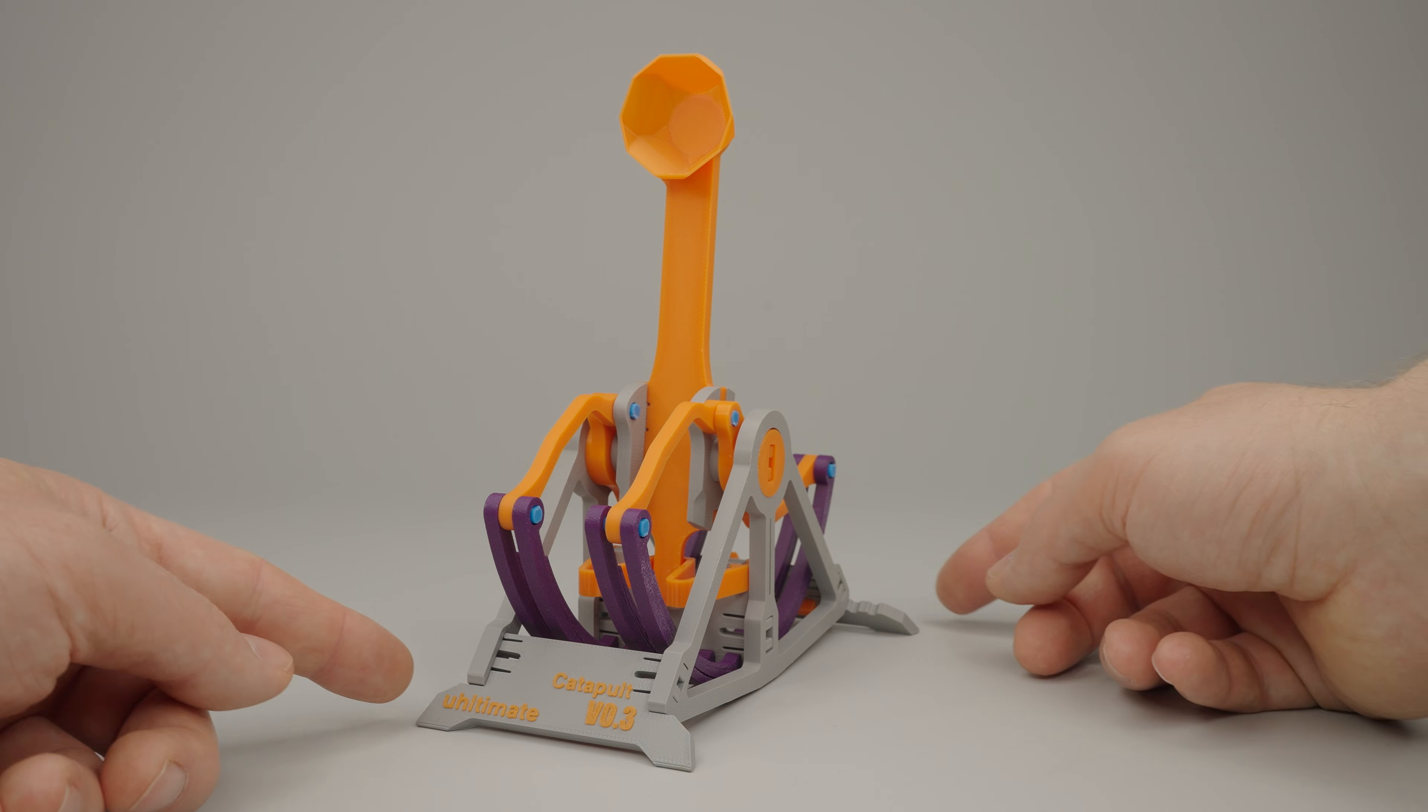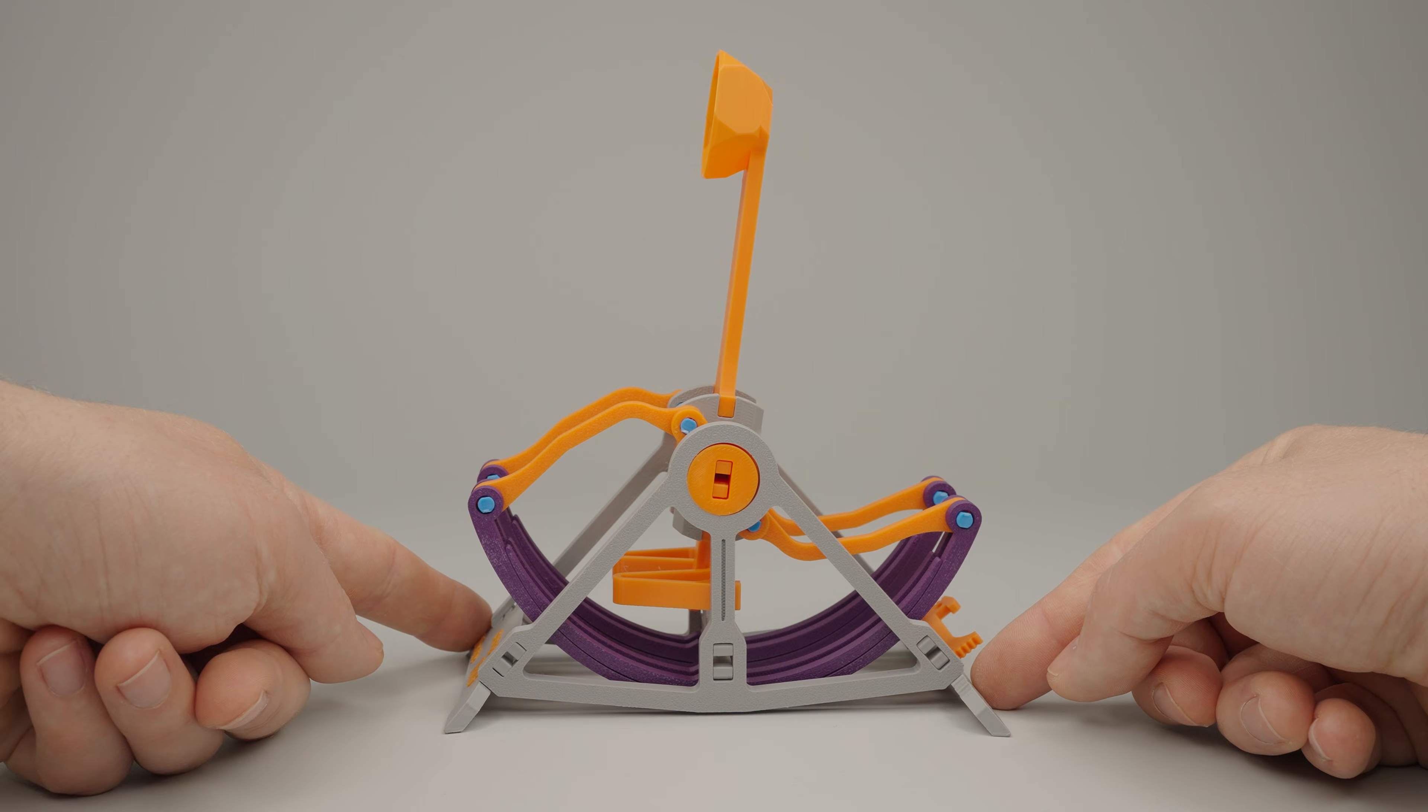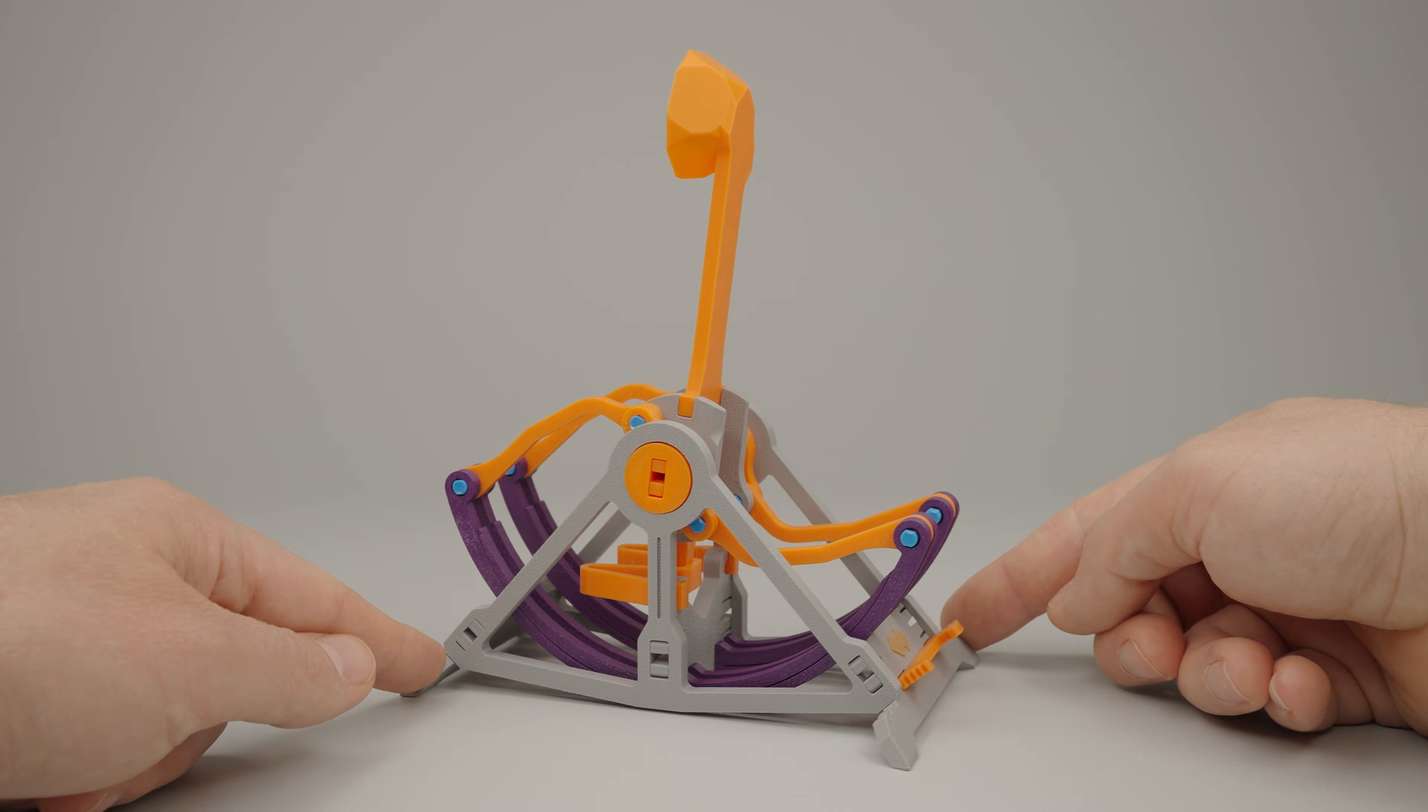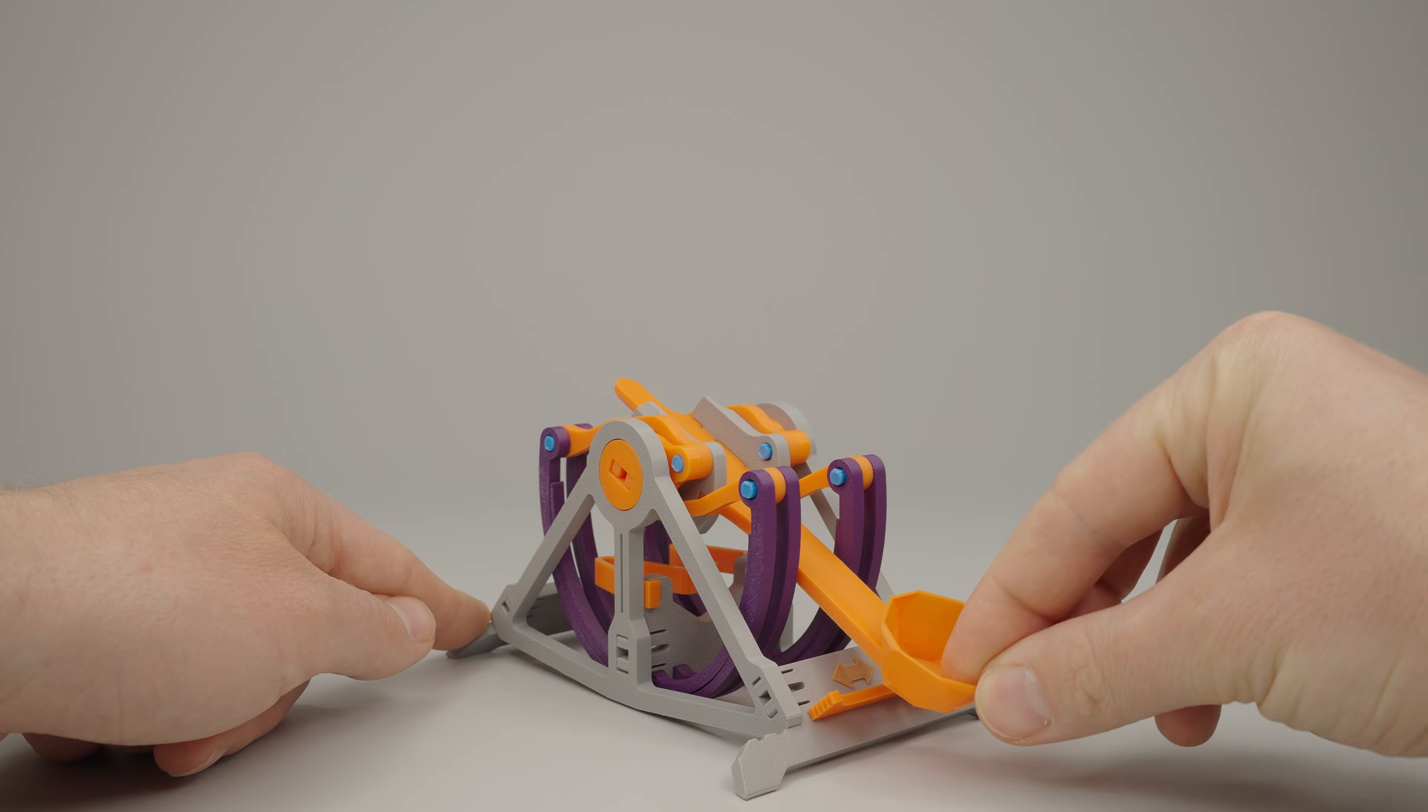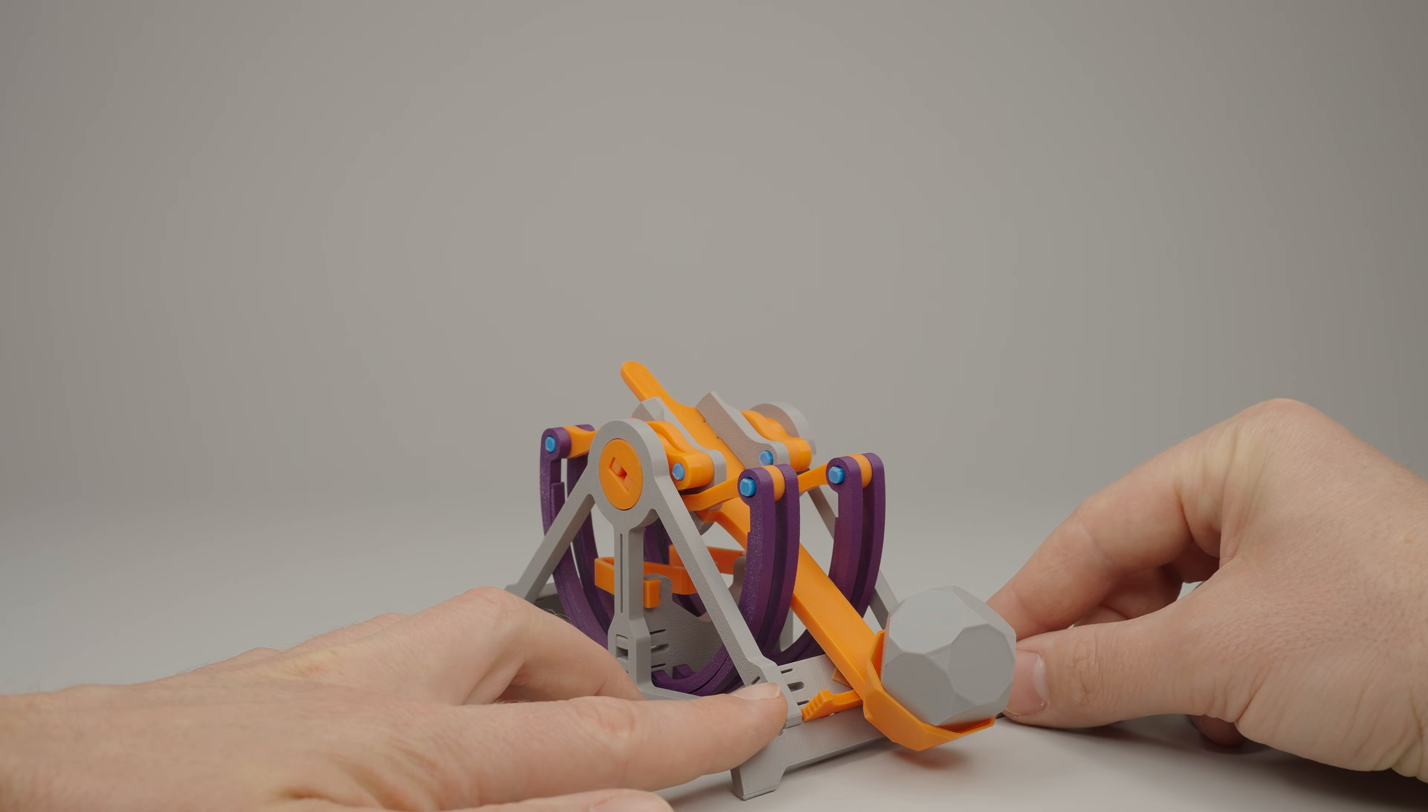This is my model of a catapult made entirely from 3D printed parts using PLA material. What's special about my model is that it uses leaf springs instead of torsion springs, with four of them in total. To load the catapult, simply push the throwing arm down and lock it with the slider, then place the projectile in and your catapult is ready to fire. To launch, just push the slider back.